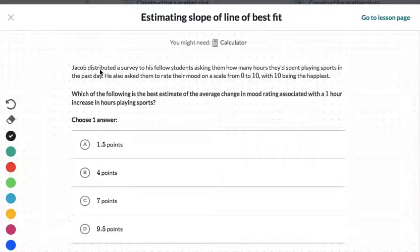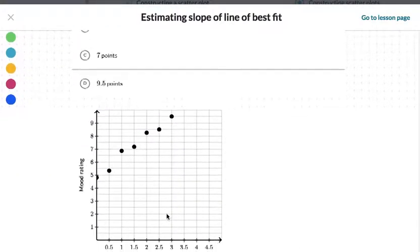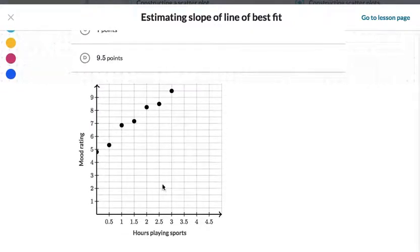Let's take a look at one more. So Jacob distributed a survey to his fellow students, asking how many hours they'd spent playing sports in the past day. He also asked them to rate their mood on the scale of 0 to 10, with 10 being the happiest. And once again, we're being asked to find the slope. As you might imagine, the difference between internet and sports are huge. It has a different effect on the body. And the longer you spend playing sports, the happier you get, versus internet, which goes the other way.